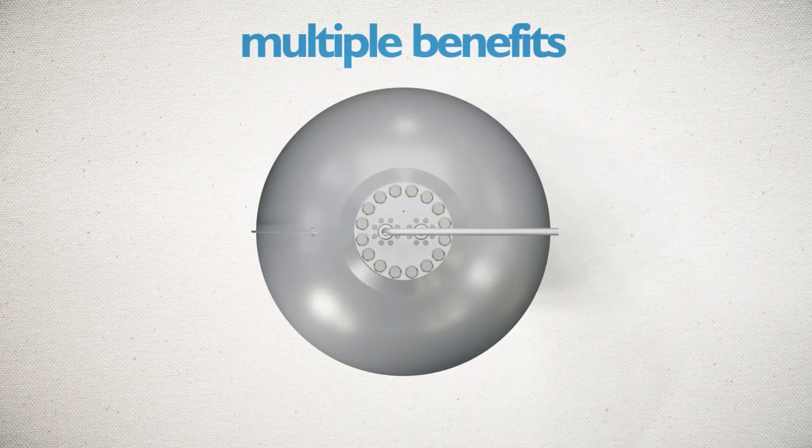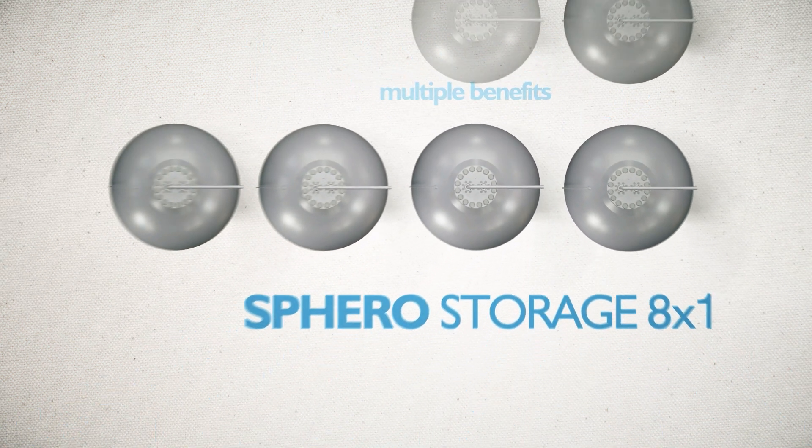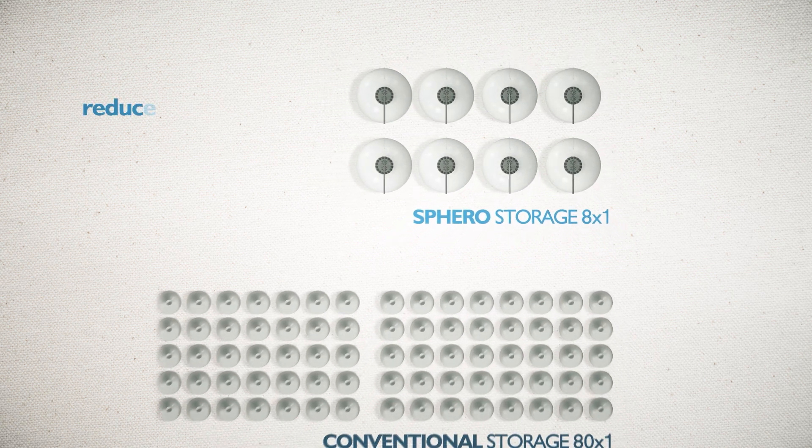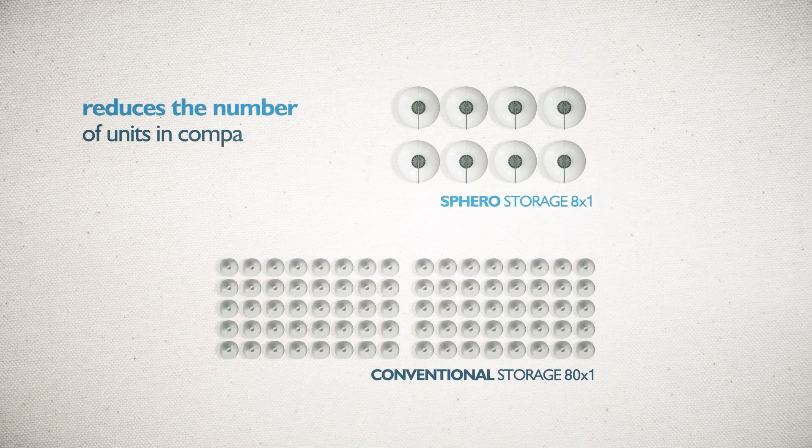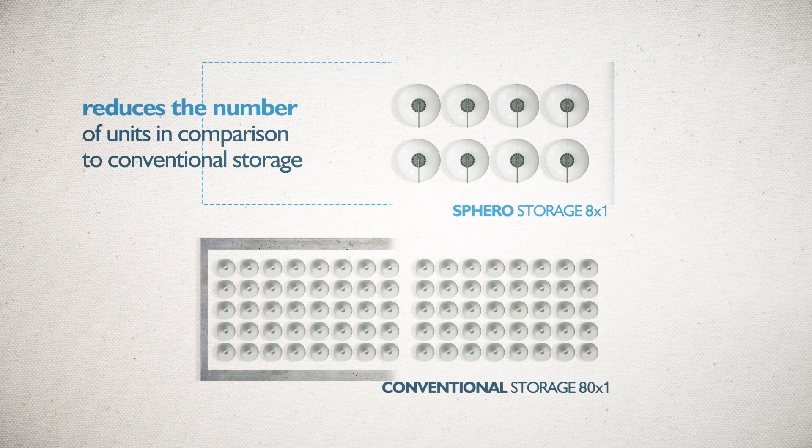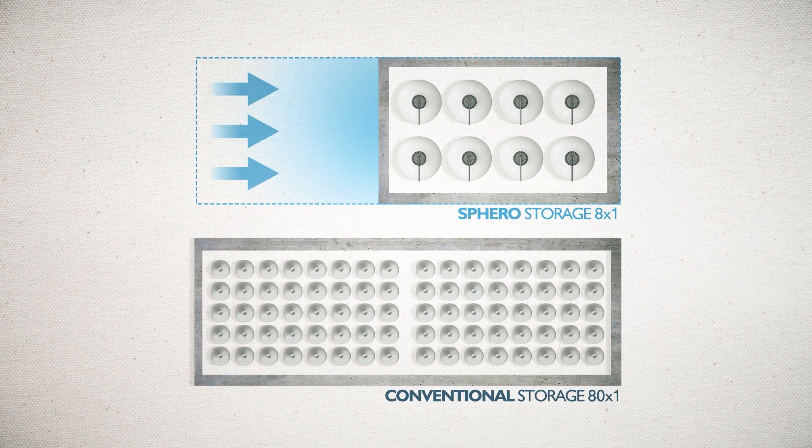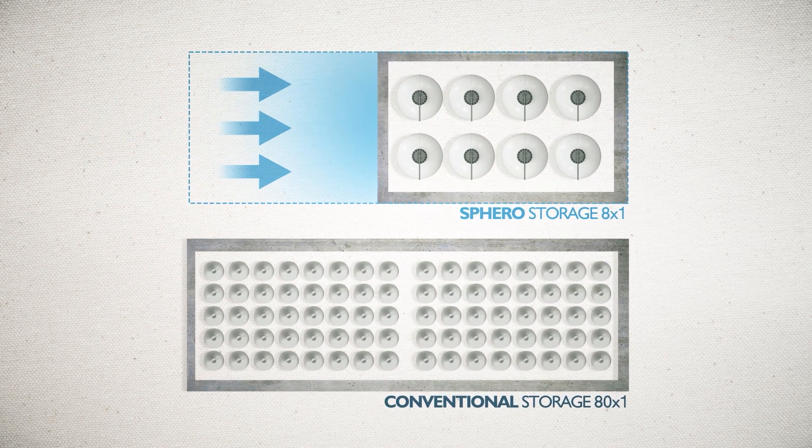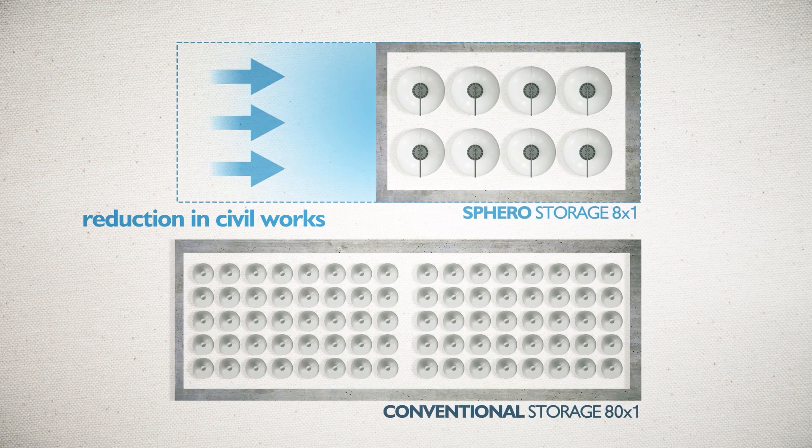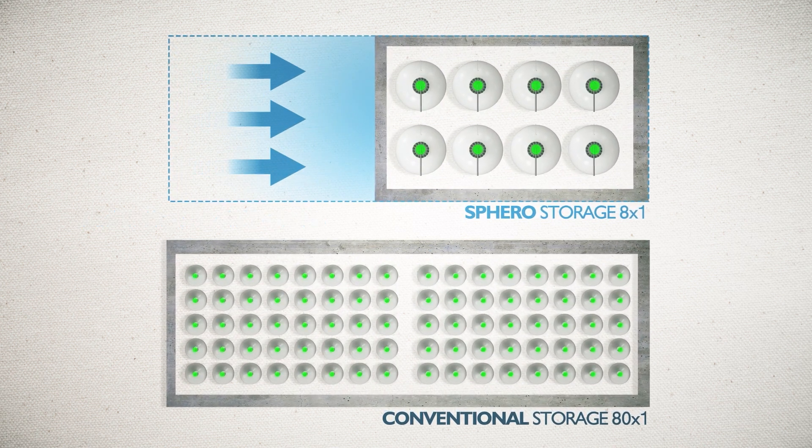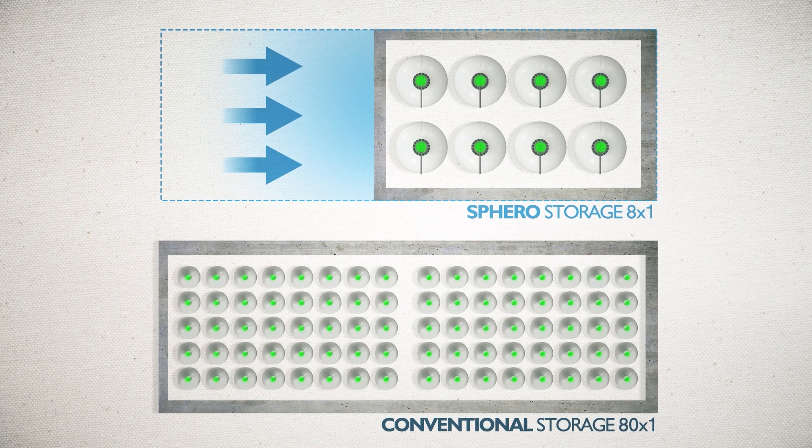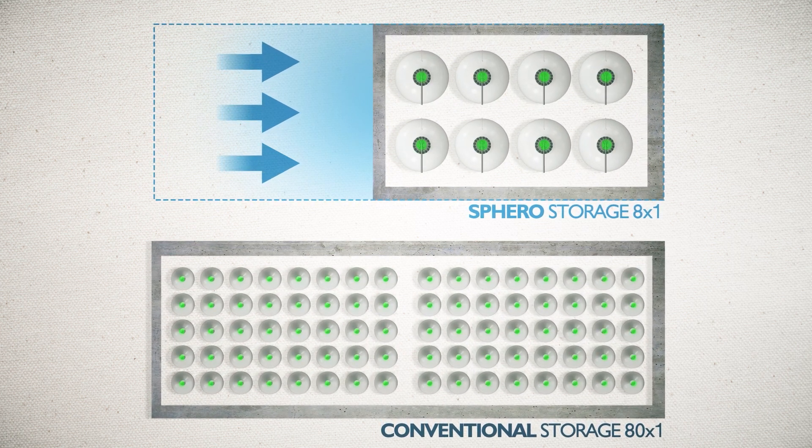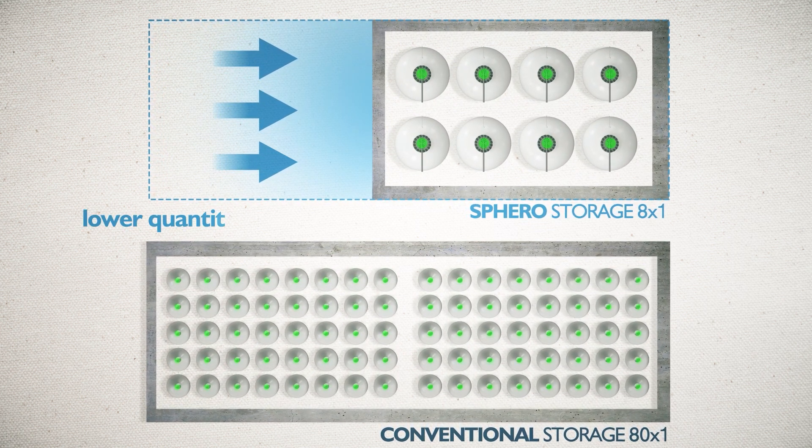Sphero, for the same amount of hydrogen stored, halves the footprint and reduces the number of units in comparison to conventional storage. The economic advantages are therefore evident, thanks to the reduction in civil works conducive to the safety of the plant. Furthermore, the costs related to the infrastructure also decrease, based on a lower quantity of units.